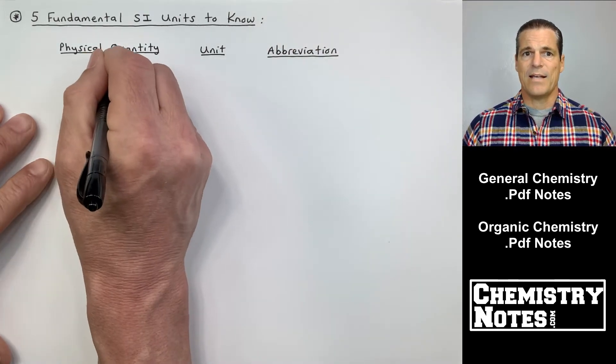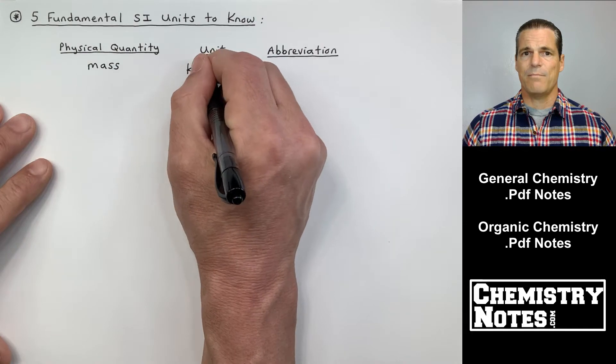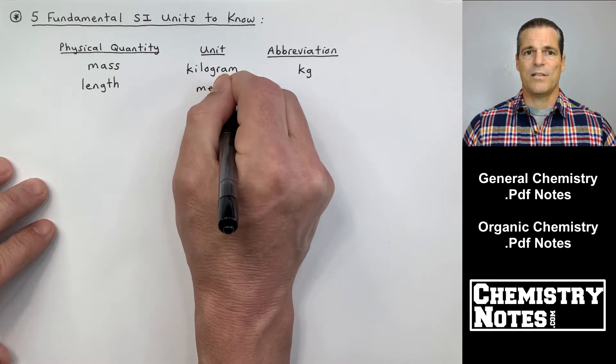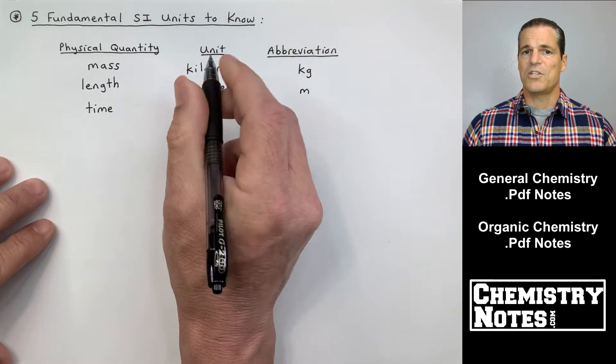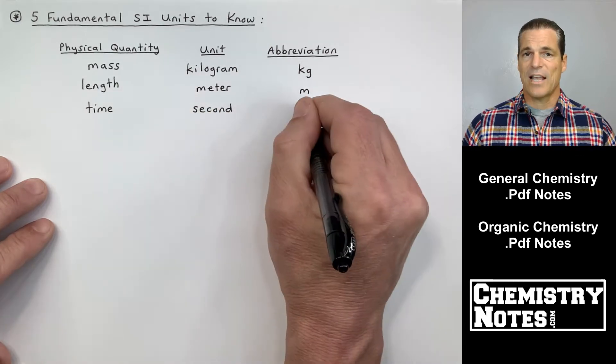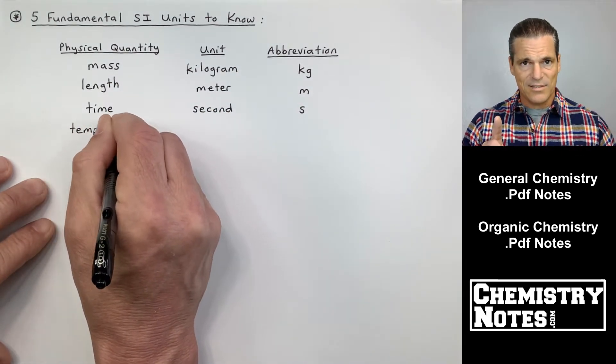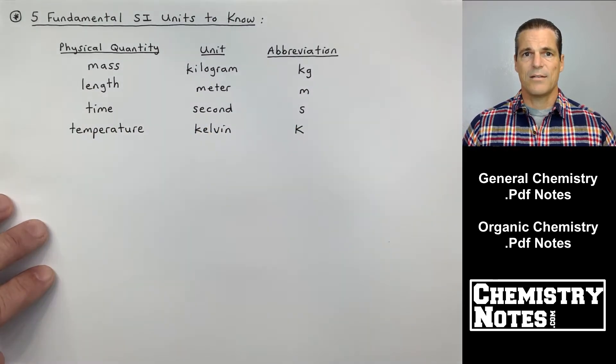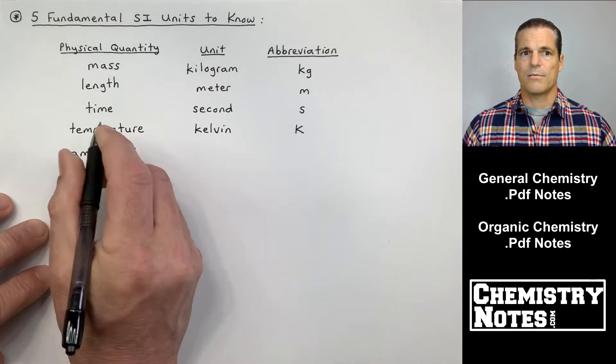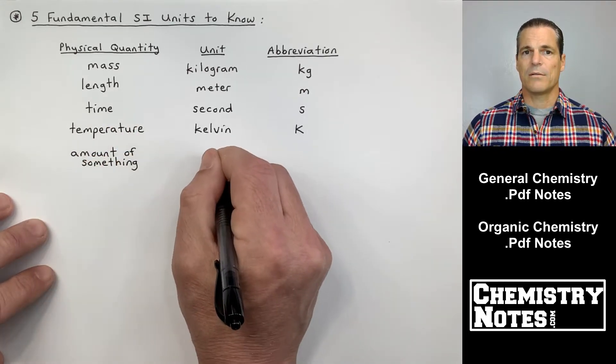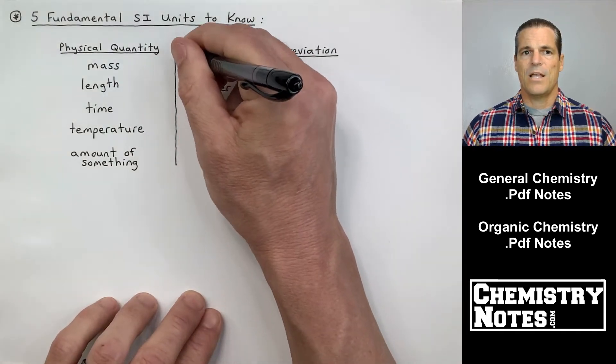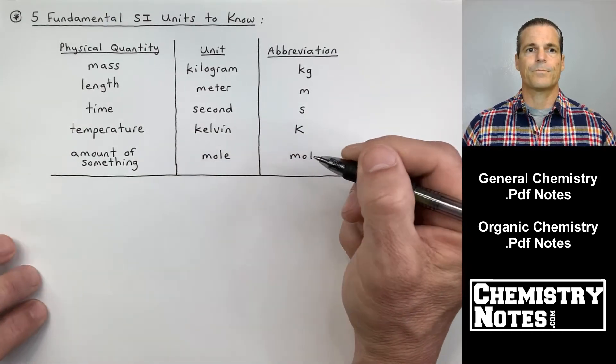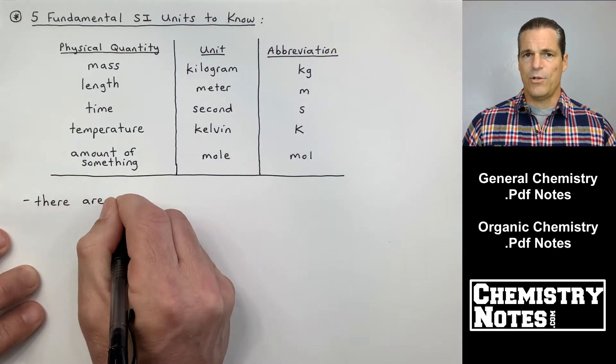So I'm going to make a list of five here. Mass, the unit is kilogram, abbreviated kg. Length, the SI base unit is meter or fundamental unit, abbreviation M. Time, second, abbreviation S, not SEC, S. Temperature Kelvin, abbreviation K, not degrees K, just plain old K. The amount of something, we'll learn a lot about the mole later on. And the abbreviation for the mole is only one letter short, MOL. Those are the five fundamental SI units to know.